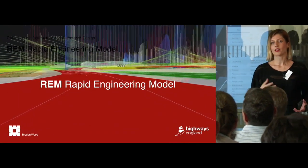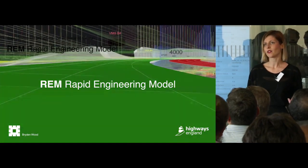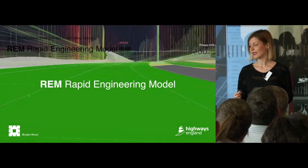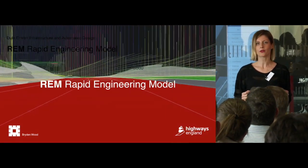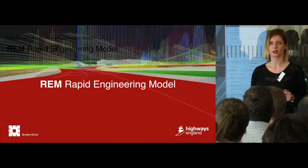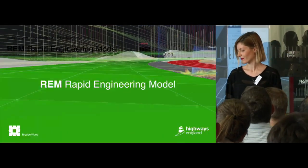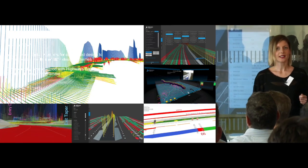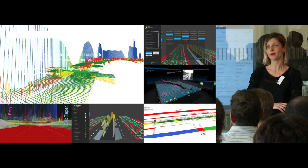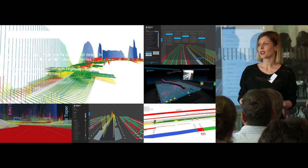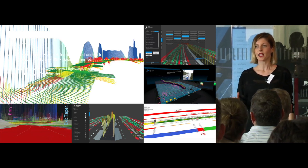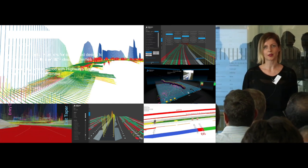What is the correlation of a data lake with Rapid Engineering Model? Rapid Engineering Model is a radical and disruptive new digital approach for automated design for the country's strategic road network. It's a process developed by Bradenwood in collaboration with Smart Motorways program of Highways England. REM is about data processes, data analytics, interactive models, and automated processes.